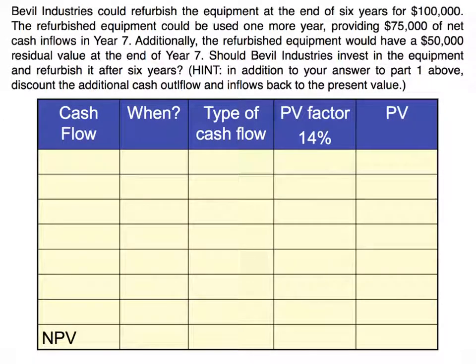Let's add to the story. Bevel Industries could refurbish the equipment at the end of six years for $100,000. The refurbished equipment could be used one more year and provide $75,000 of net cash inflows in year seven. Additionally, the refurbished equipment would have a $50,000 residual value at the end of year seven. Should Bevel Industries invest in the equipment and refurbish it? Press pause and see if you can figure it out, then come back and we'll look at it together.